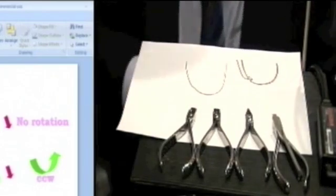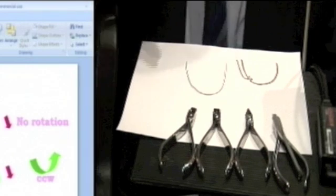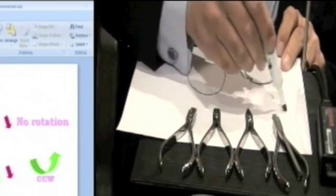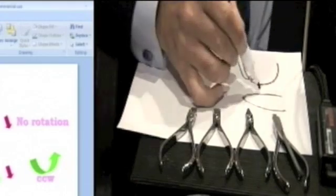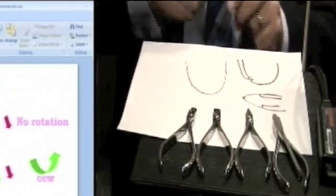So let's just say my bracket position is too gingival or too incisal. I don't want to reposition. On TMA, I can use the same wire but now the wire's like that. And I can do a step up or a step down. So let's use the same wire.